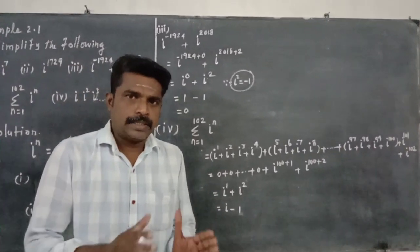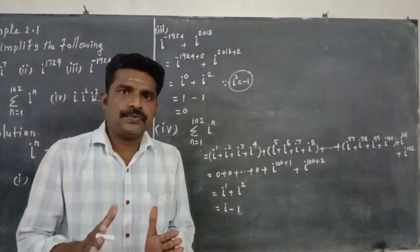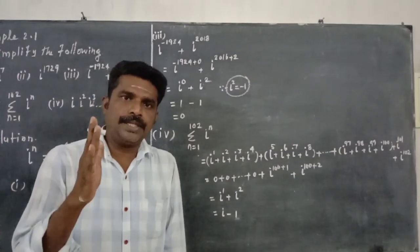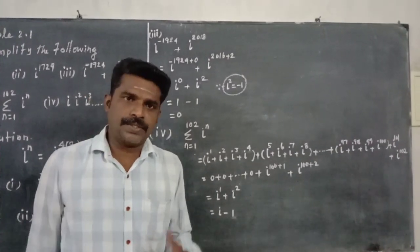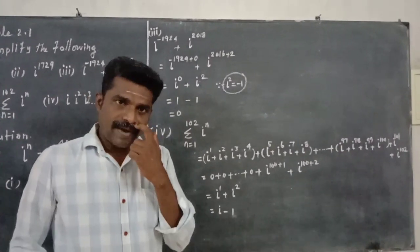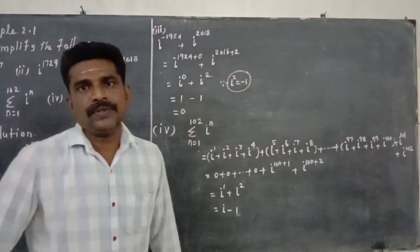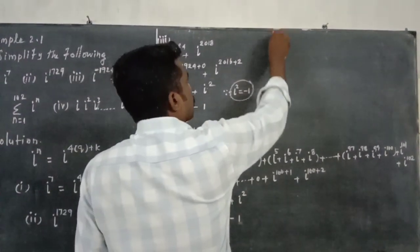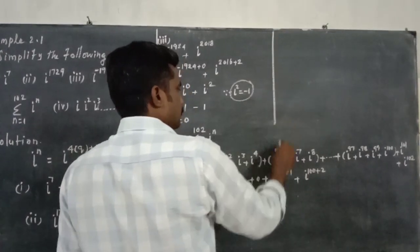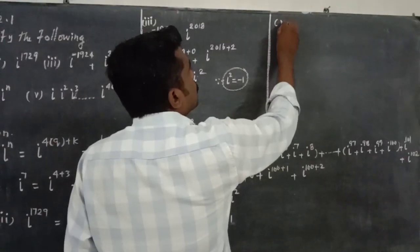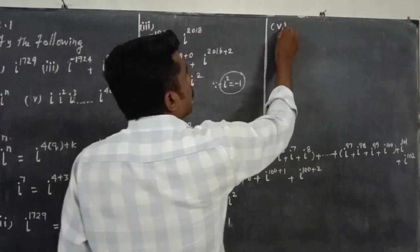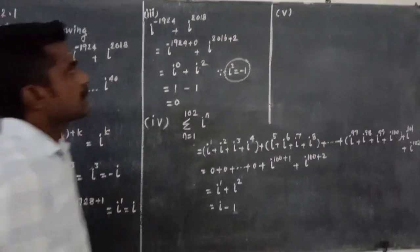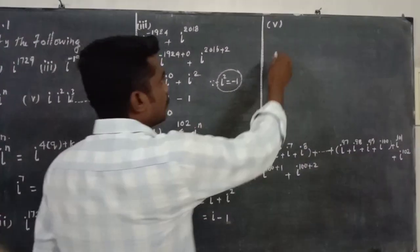The sum of four consecutive powers of the imaginary unit is zero. Fifth: summation of i power 1 plus i power 2 plus i power 3, and so on up to i power 40.